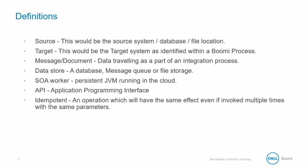Before we dive into the first one, let's review some terms and concepts. The source is the source system, database, or file location. The target is the target system as identified within the process. A message or document is the data traveling as part of an integration process. The data store is a database, message queue, or file storage. The SOA worker is a persistent JVM running in the cloud. API is application programming interface. And idempotent is an operation which will have the same effect even if invoked multiple times with the same parameters.